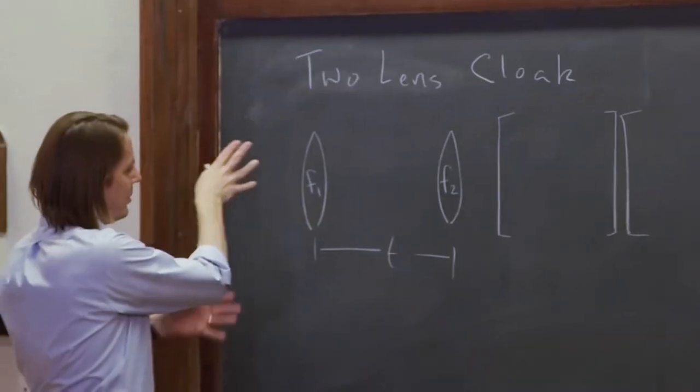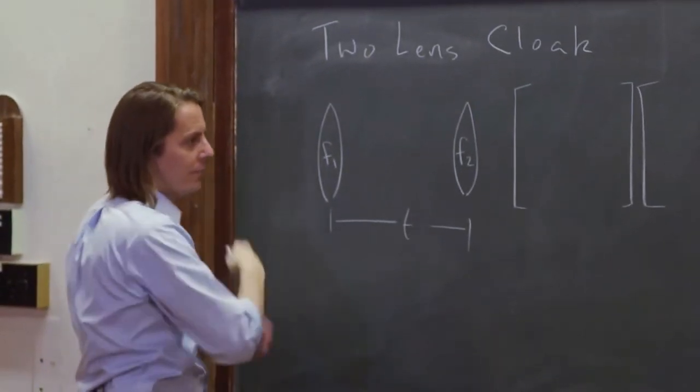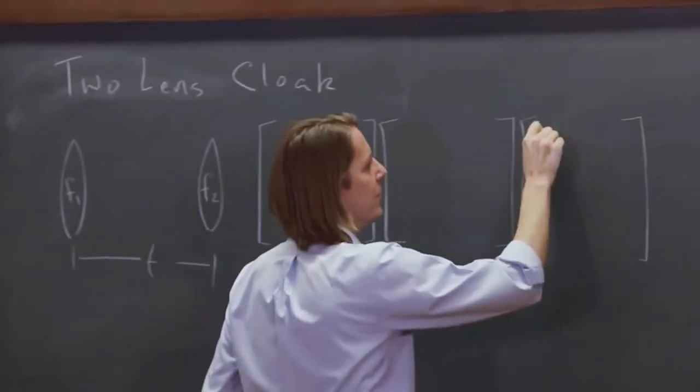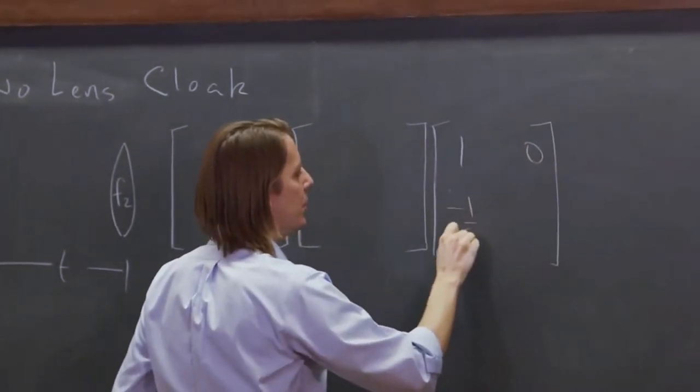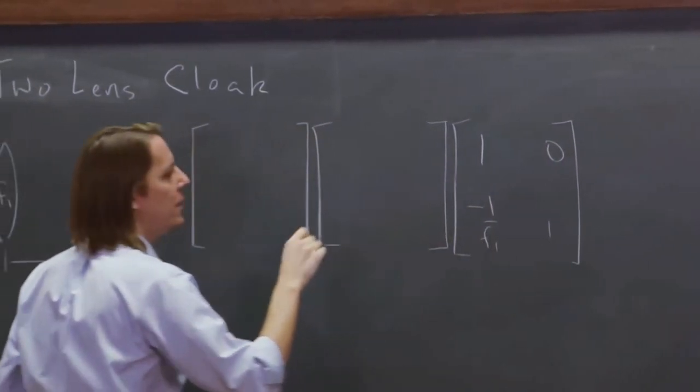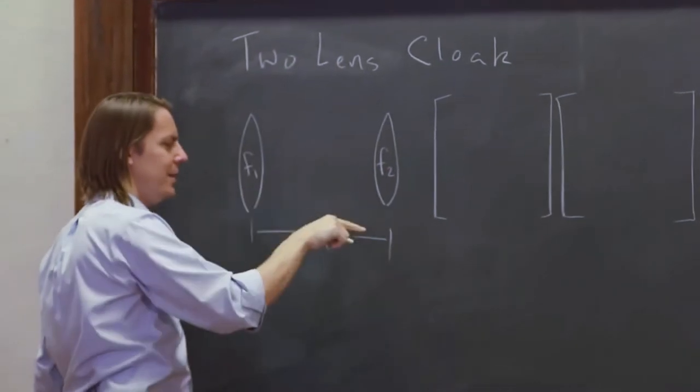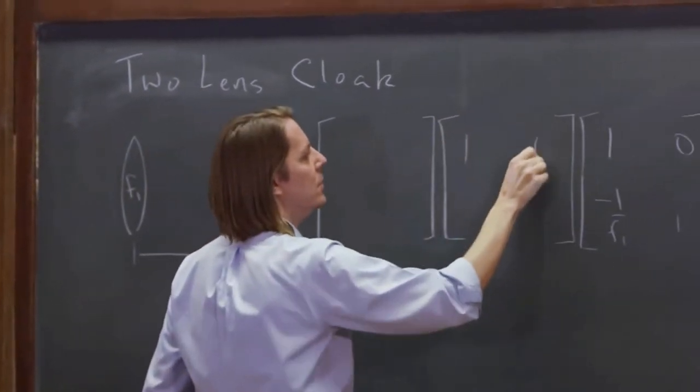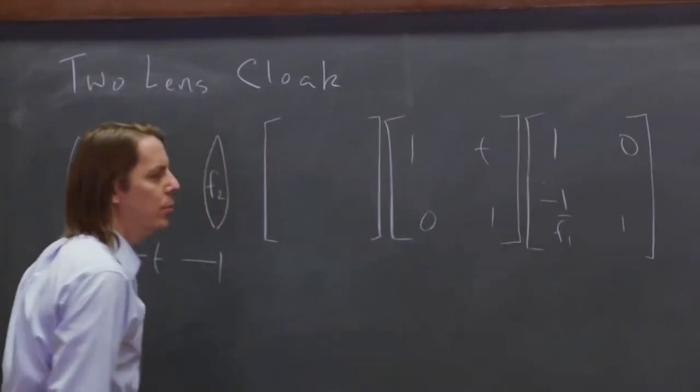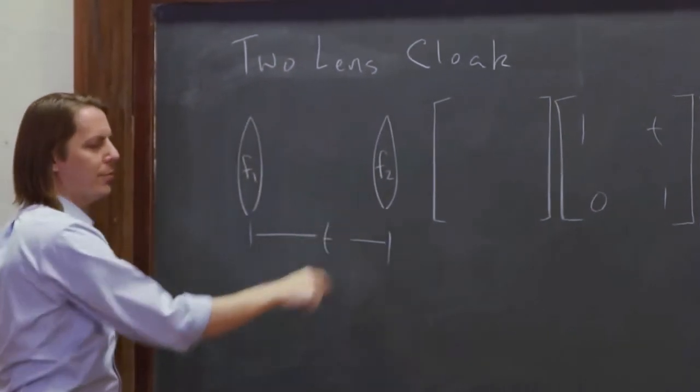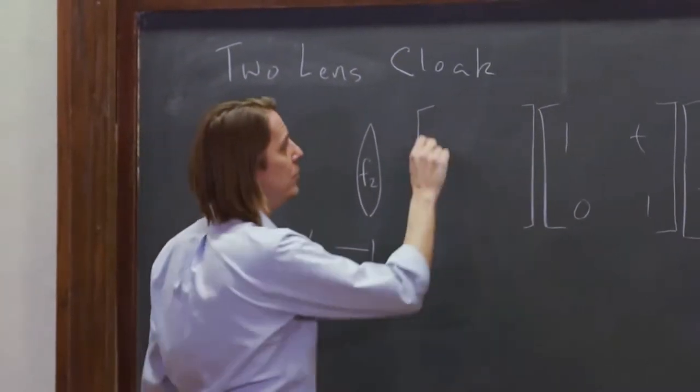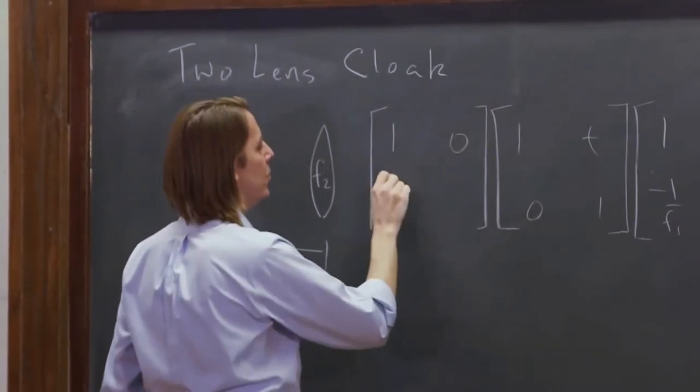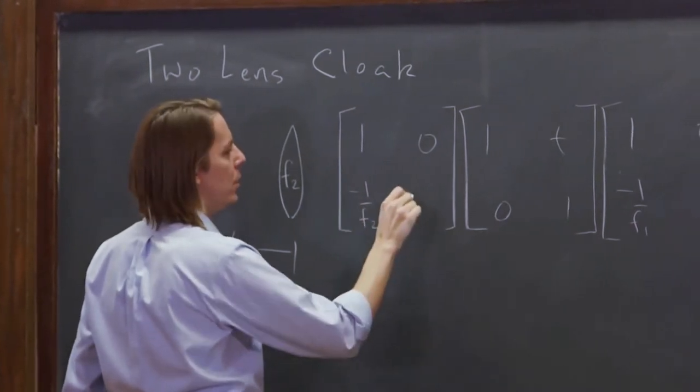Okay, so the first thing that's going to happen is the light is going to refract off of the first thin lens, that's 1, 0, minus 1 over F1, 1. And then it's going to propagate a distance T, that's 1, T, 0, 1. And then it's going to refract off of thin lens 2, so that's 1, 0, minus 1 over F2, 1.